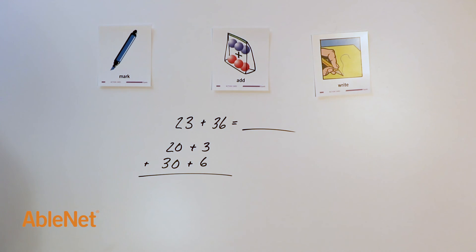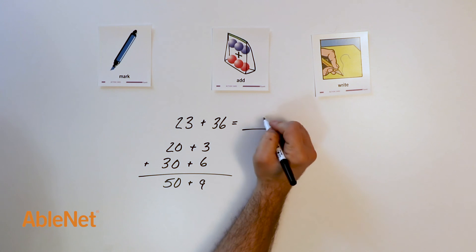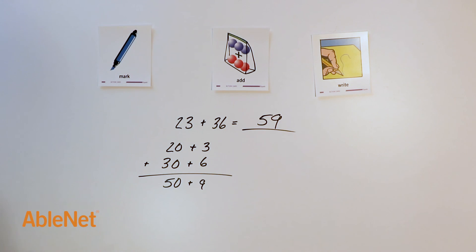Now I can add to solve. 3 plus 6 equals 9. 20 plus 30 equals 50. 50 plus 9 equals 59. The hiking shoes cost $59.